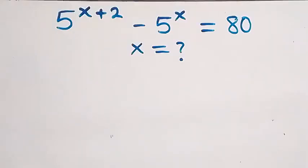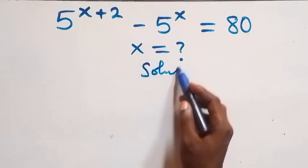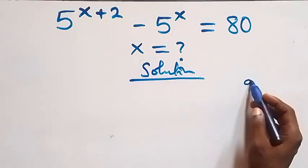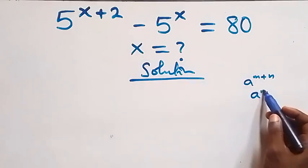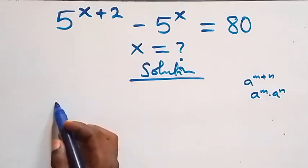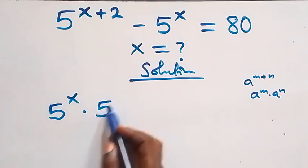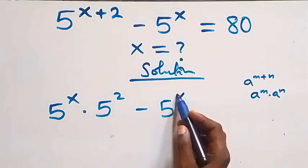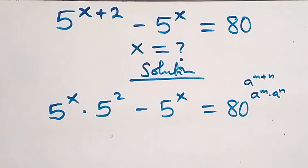Hello, you're welcome. Here's how to solve this exponential equation. From what we have, using the rule a raised to power m plus n equals a raised to power m times a raised to power n, we have 5 raised to power x times 5 squared, then minus 5 raised to power x, equals 80.